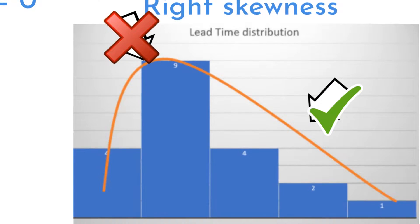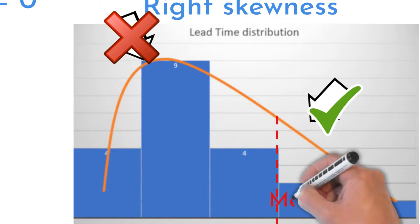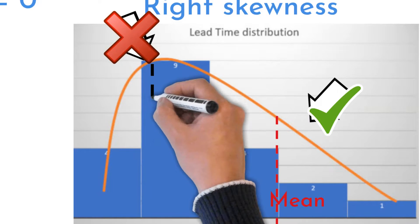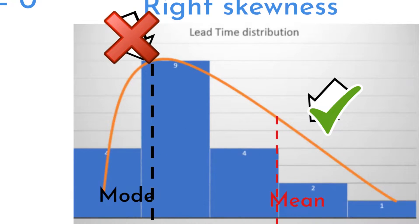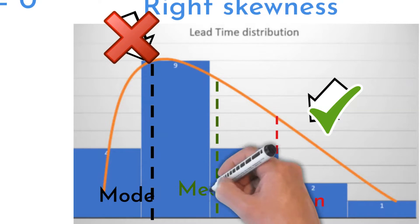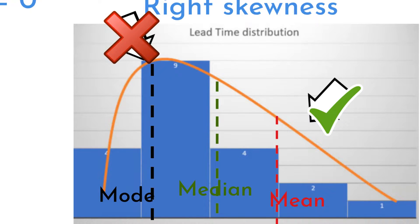On the right skewed distribution, most of the data values occur on the left side, with decreasing data on the right side. Mean is located on the right side of the curve. Mode close to the peak. Median is located in between. All three are not the same number.